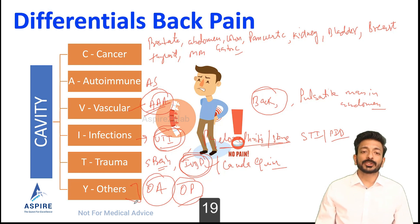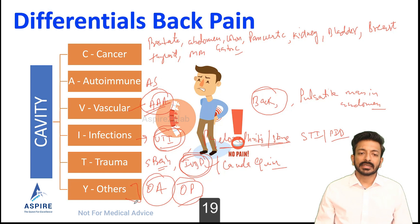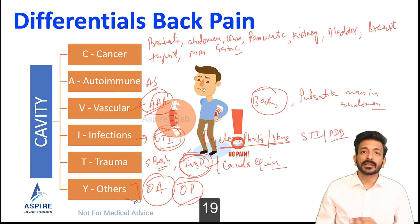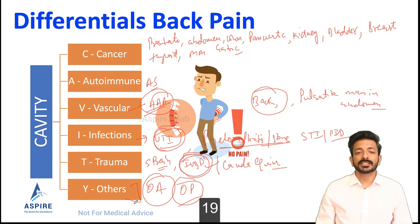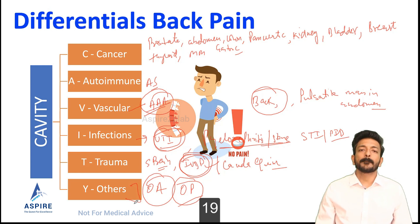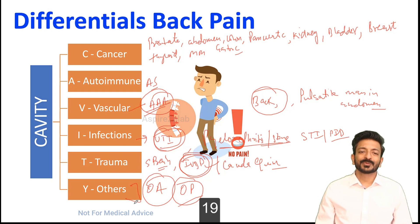This is how we narrow down our differentials and reach a diagnosis for back pain. If you go through the sequence — presenting complaint, past medical history, personal and social history, examination, and investigations — you will never miss the proper diagnosis in a case of back pain.